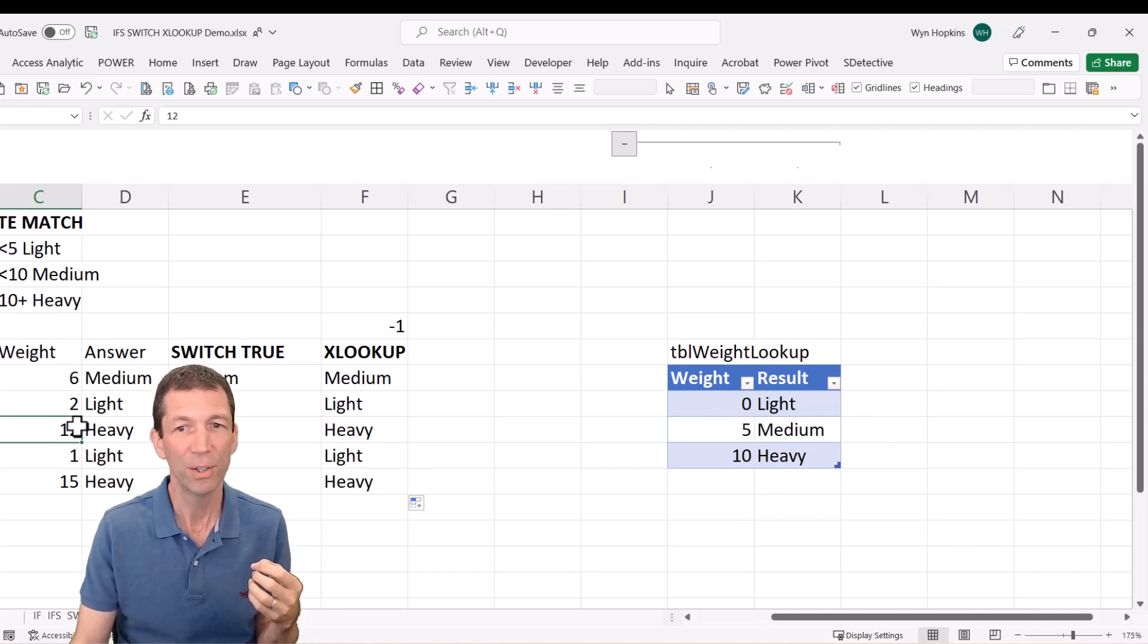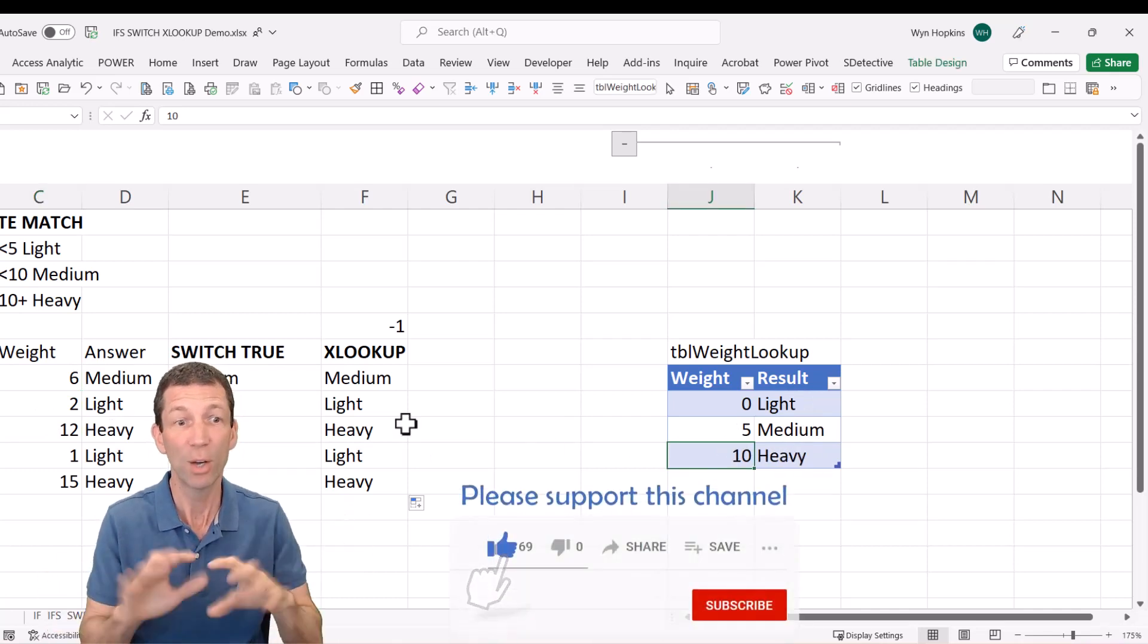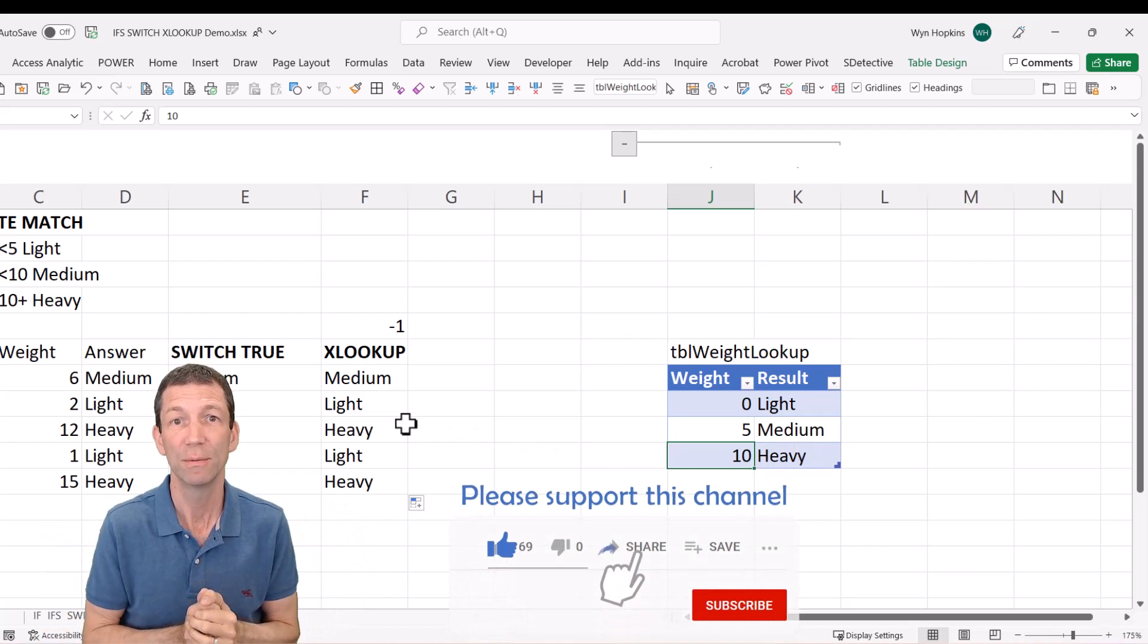The 12 here, the next smaller item is 10, so it returns heavy. Beautiful, there you go, quick little demonstration, hope you find it useful.